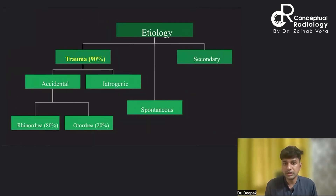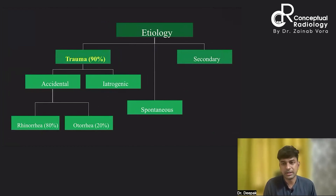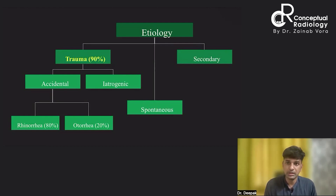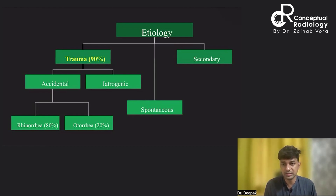The most common etiology is traumatic — about 90 percent of cases have a history of trauma, either accidental or iatrogenic. Nowadays, with increased use of endoscopic and minimally invasive options such as the transsphenoidal route in neurosurgery and the ethmoidal route in FESS, there is a high risk of injury to the base of skull, which can result in dural involvement and CSF leak.